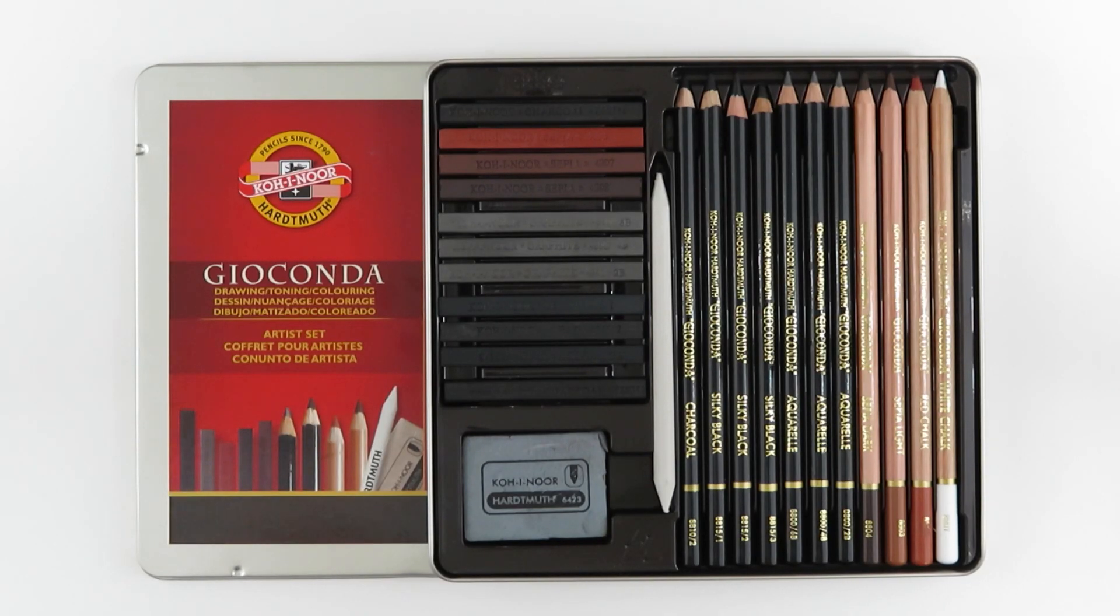Koh-I-Noor carbon pencils are called silky black, and the blocks are stamped with the word lead. Both are available in the Gioconda art set, including the red chalk and also the white chalk.